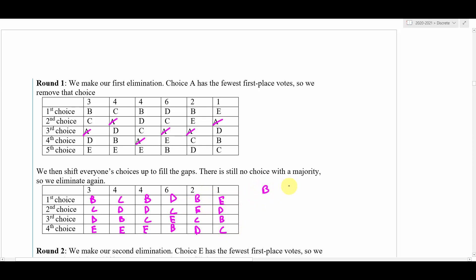We have B, C, D, and E, and we would retally. So B would have nine votes, C would have four votes, D would have six votes, and E would have one. Then we would continue on the election. Whoever has the lowest number of first place votes gets eliminated next, so E is going to be eliminated.